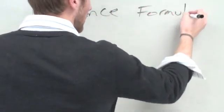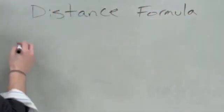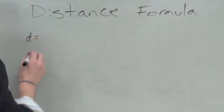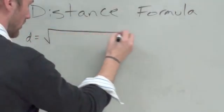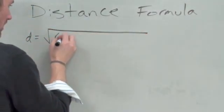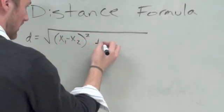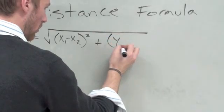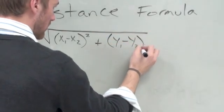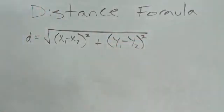Distance formula. Write this down on your paper. D equals square root of (x₁ - x₂)² + (y₁ - y₂)². If you don't have it written down, write it down because you need it. That's the distance formula. That'll find the distance between two coordinates.